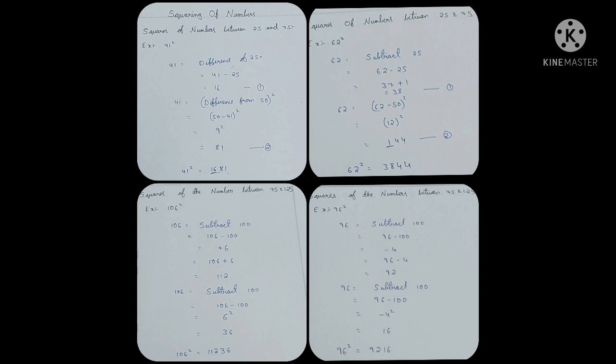Similarly, by using this way, you can find the square of numbers between 25 to 125 easily.